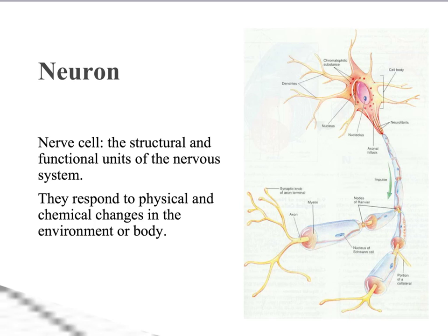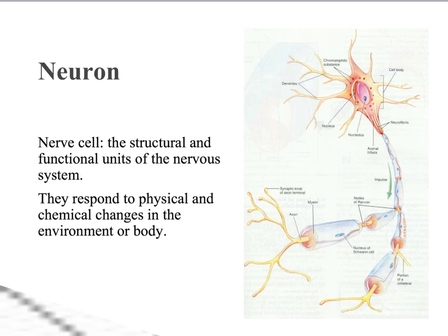If there's enough of a stimulus to get this neuron to respond, it will send an impulse down the long branching end called the axon. Impulses start at the dendrite end and travel down the axon. The end of the axon is called the synaptic knob. There are special helper cells sitting on the axon called Schwann cells, and the little gaps in between them are called nodes of Ranvier.